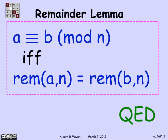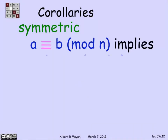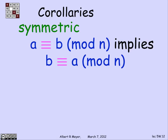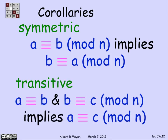The remainder lemma shows that congruence inherits many properties of equality, since it means nothing more than that the remainders are equal. Congruence is symmetric: if A is congruent to B, then B is congruent to A, because A and B have the same remainder, so B and A do too. Congruence is also transitive: if A is congruent to B and B is congruent to C, then A and B share a remainder, and B and C share a remainder, so A and C share a remainder — and A is congruent to C.